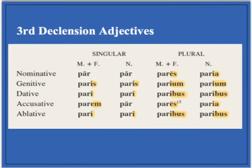Here's an example of a third declension adjective that has just one unique nominative singular. Notice how par for the masculine and feminine is the same as par for the neuter, and it just declines the same.